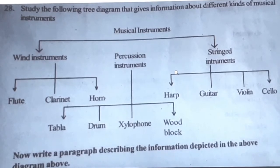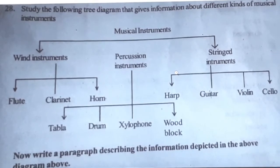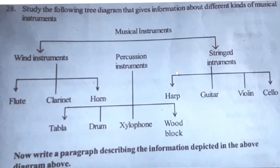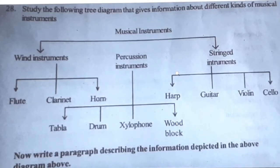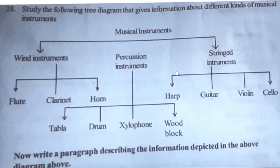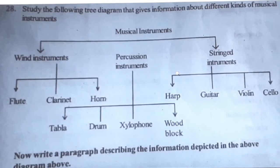They are wind instruments, percussion instruments, and stringed instruments. Examples for wind instruments are given. Flute, clarinet and horn are the examples of wind instruments.